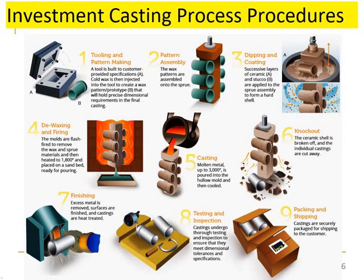Step five: casting — molten metal, up to 3,000°C, is poured into the hollow mold and then cooled. Step six: knockout — the ceramic shell is broken off and the individual castings are cut away. Step seven: finishing — excess metal is removed, surfaces are finished, and castings are heat-treated. Step eight: testing and inspection — castings undergo thorough testing and inspection to ensure they meet dimensional tolerances and specifications. Step nine: packing and shipping — castings are securely packaged for shipping to the customer.